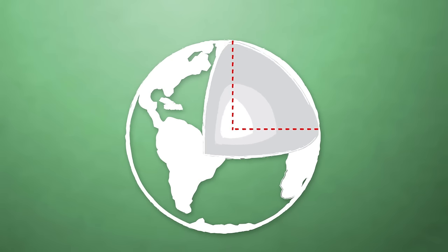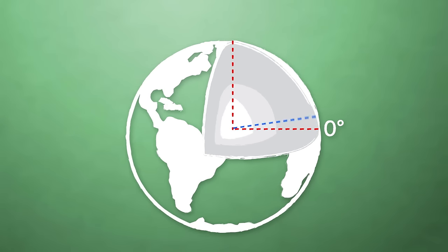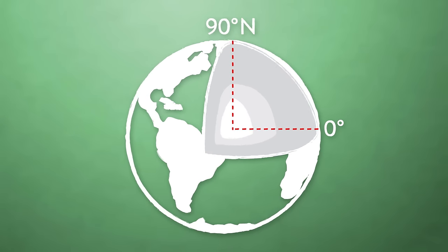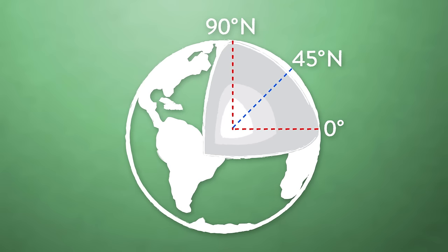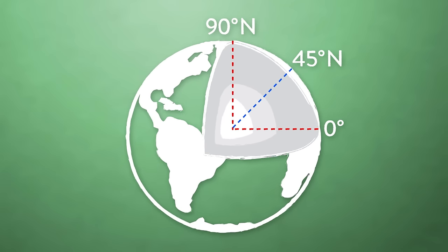So the equator would have zero degrees latitude, and the north pole would have 90 degrees north latitude, and a location halfway between the north pole and the equator would lie at 45 degrees north. Same thing for the southern hemisphere, except you'd call it degrees south.